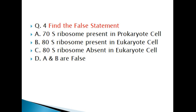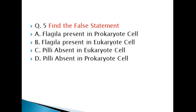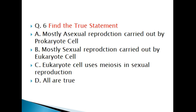Question 4: Find the false statement. A) 70S ribosome present in prokaryote cell, B) 80S ribosome present in eukaryote cell, C) 80S ribosome absent in eukaryote cell, D) A and B are false. Question 5: Find the false statement. A) Flagella present in prokaryote cell, B) Flagella present in eukaryote cell, C) Pili absent in eukaryote cell, D) Pili absent in prokaryote cell. Question 6: Find the true statement. A) Mostly asexual reproduction carried out by prokaryote cell, B) Mostly sexual reproduction carried out by eukaryote cell, C) Eukaryote cell uses meiosis in sexual reproduction, D) All of these.